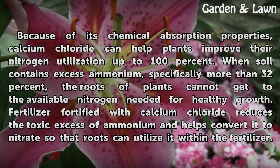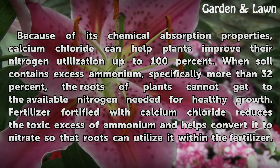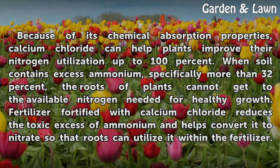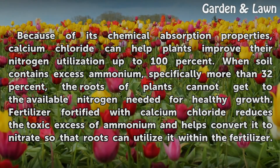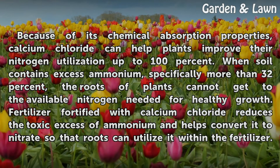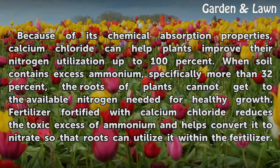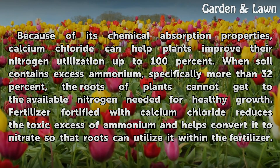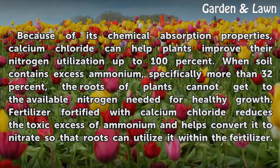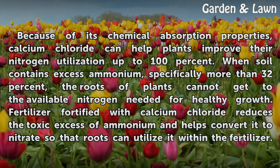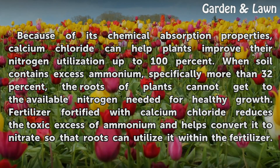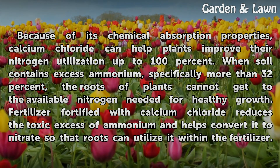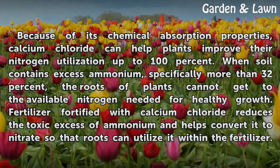Because of its chemical absorption properties, calcium chloride can help plants improve their nitrogen utilization up to 100%. When soil contains excess ammonium — specifically more than 32% — the roots of plants cannot get to the available nitrogen needed for healthy growth.